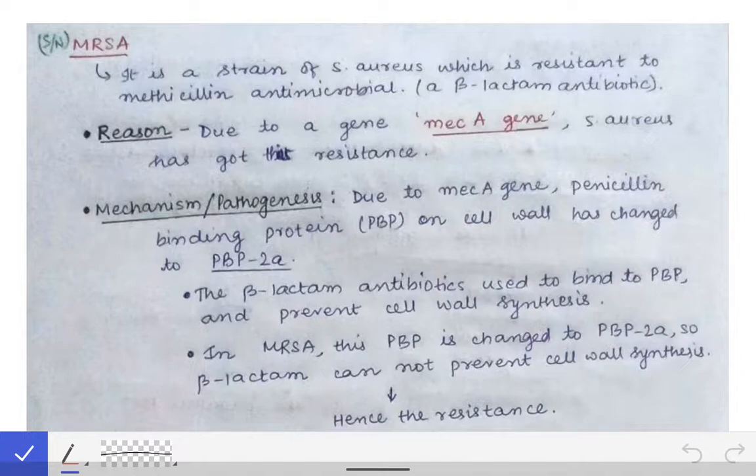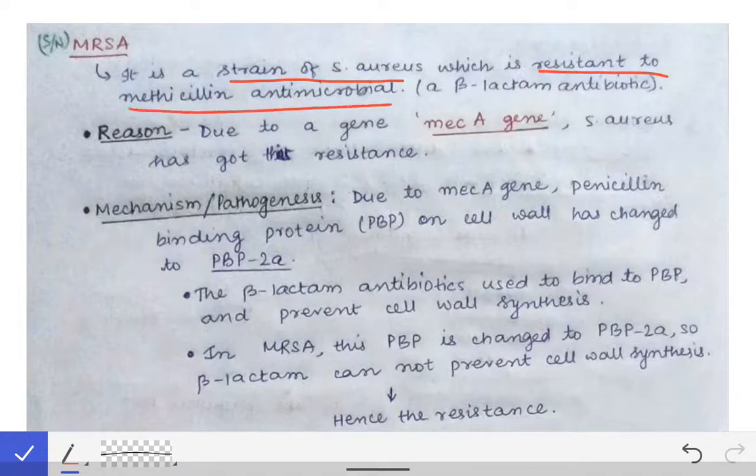Since Staphylococcus aureus has become resistant to methicillin, it has become very tough to kill this MRSA strain of Staphylococcus aureus. That is why it is very important for us to discuss it separately, and some questions are also asked separately from this MRSA topic as a short note or short answer questions. MRSA is a strain of Staphylococcus aureus which is resistant to the methicillin antimicrobial.